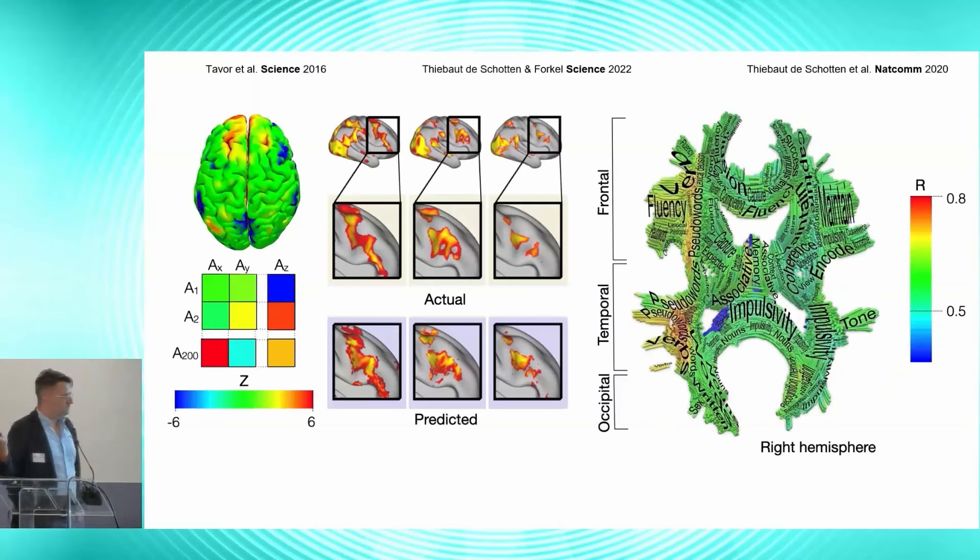So you can repeat that hundreds of times and start creating those maps where this time you project the term that is studied in functional neuroimaging onto the white matter. That will be the map on the right. You can see that you have like pseudo words and language on the left and center. You'll have memory on the right. You'll have impulsivity and maintaining information and so on and so forth.